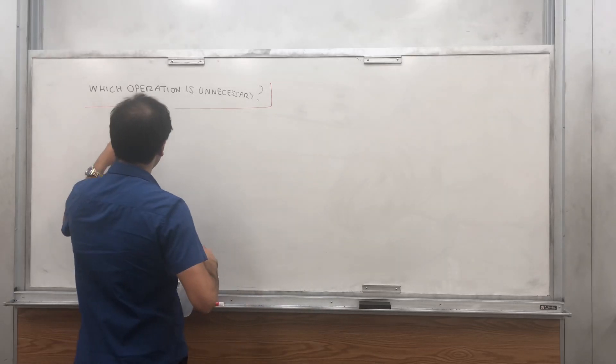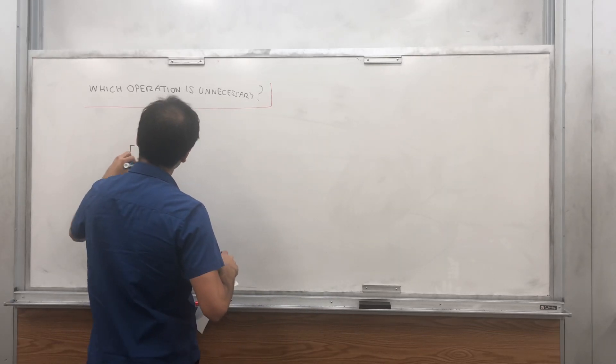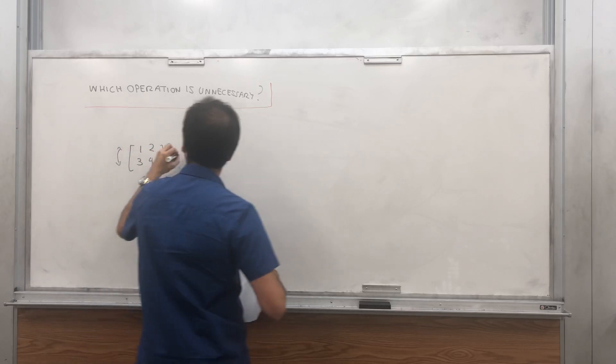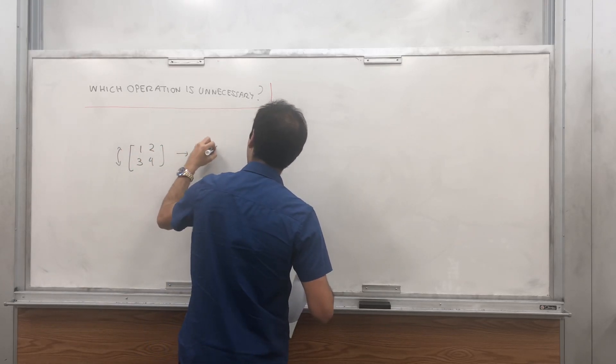First of all, you can interchange two rows of a matrix: one, two, three, four. You interchange it to get three, four, one, two.